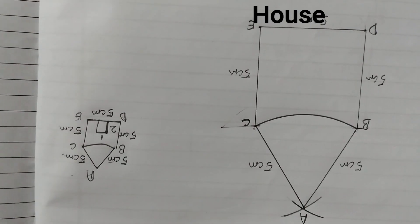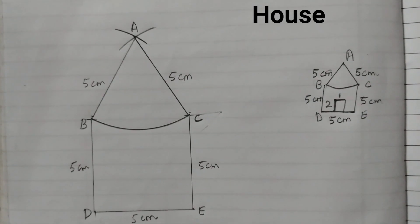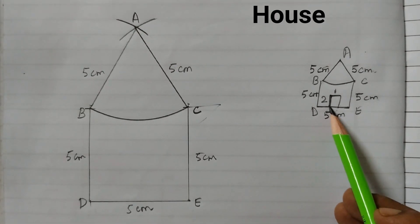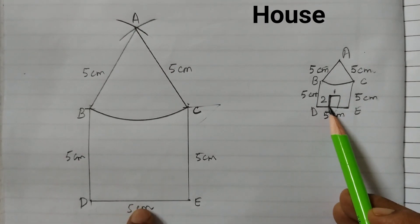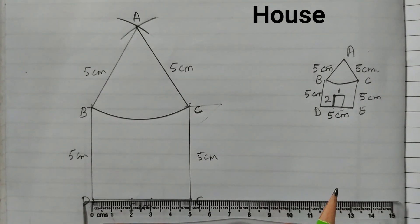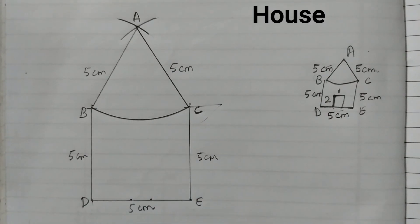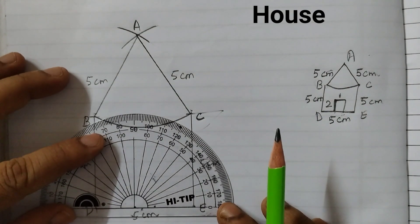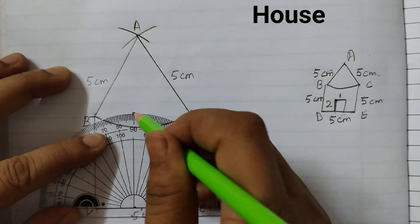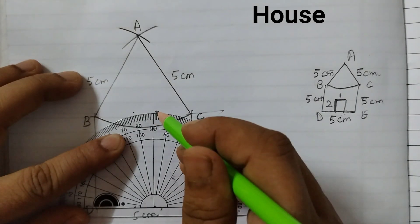Next we will draw this door. If you want you can draw this in the very beginning itself when you are drawing this line segment. So I forgot to do it. I will do it now. Here you will place the scale like this. Mark a point at 2 and 3. Because we have to draw the door exactly in the middle. Now draw perpendicular here. This is 90 degrees. And here this is also 90 degrees.